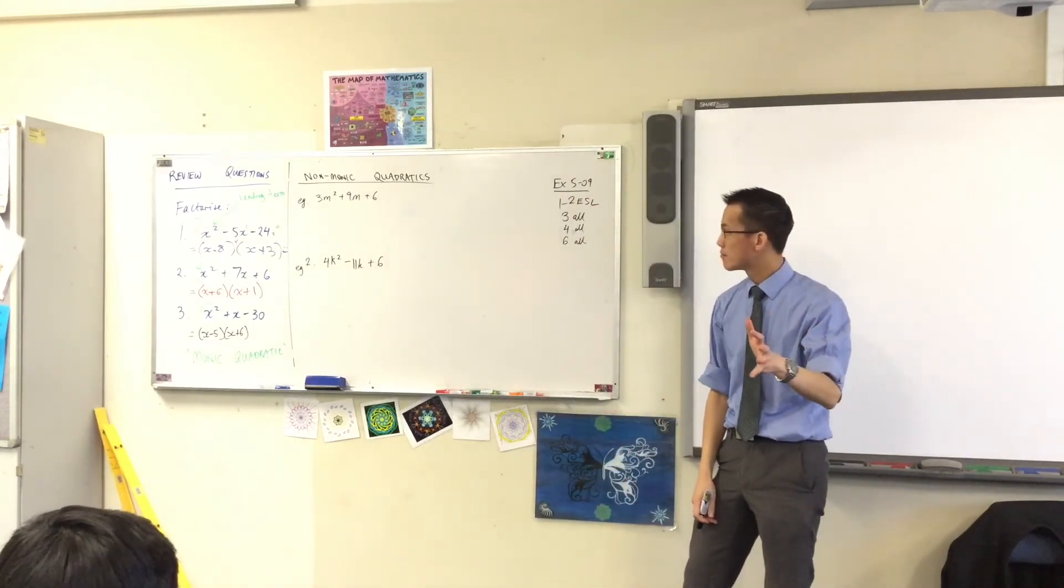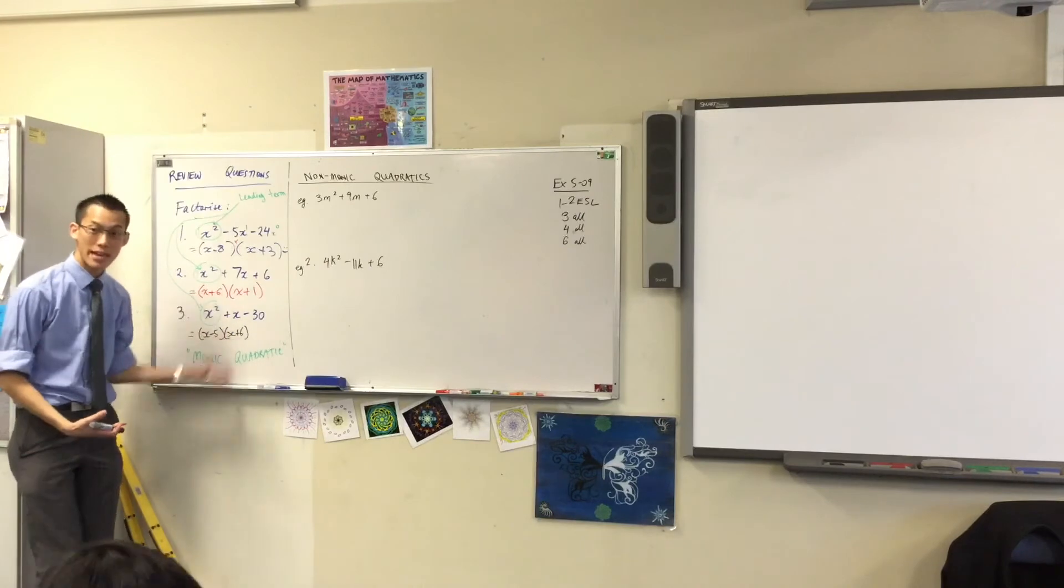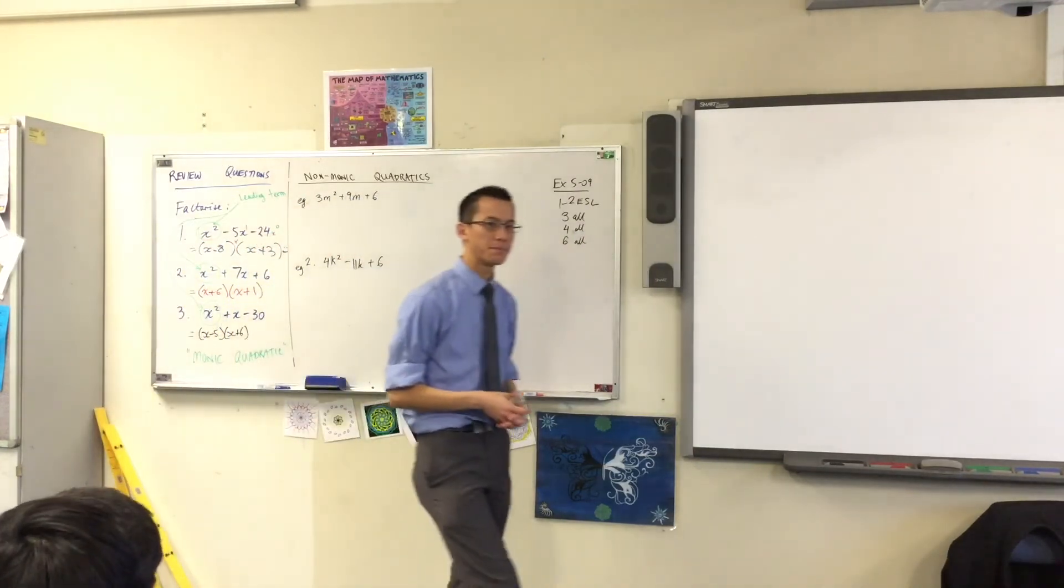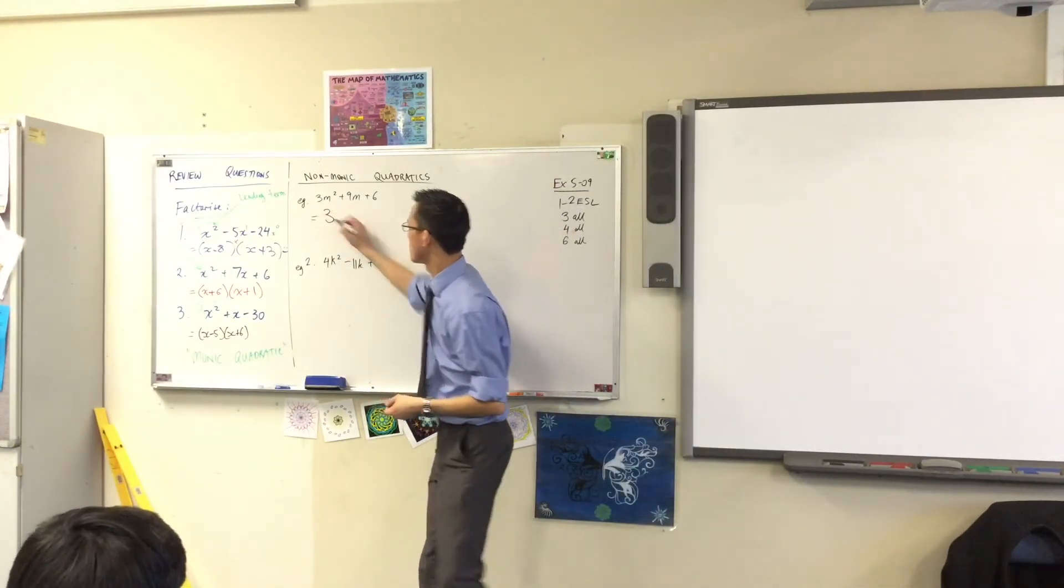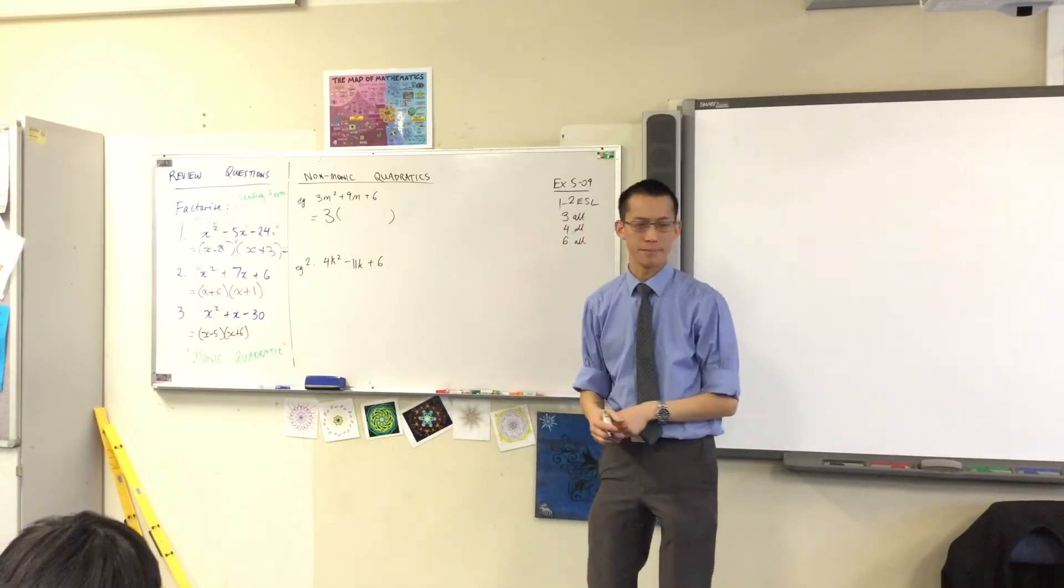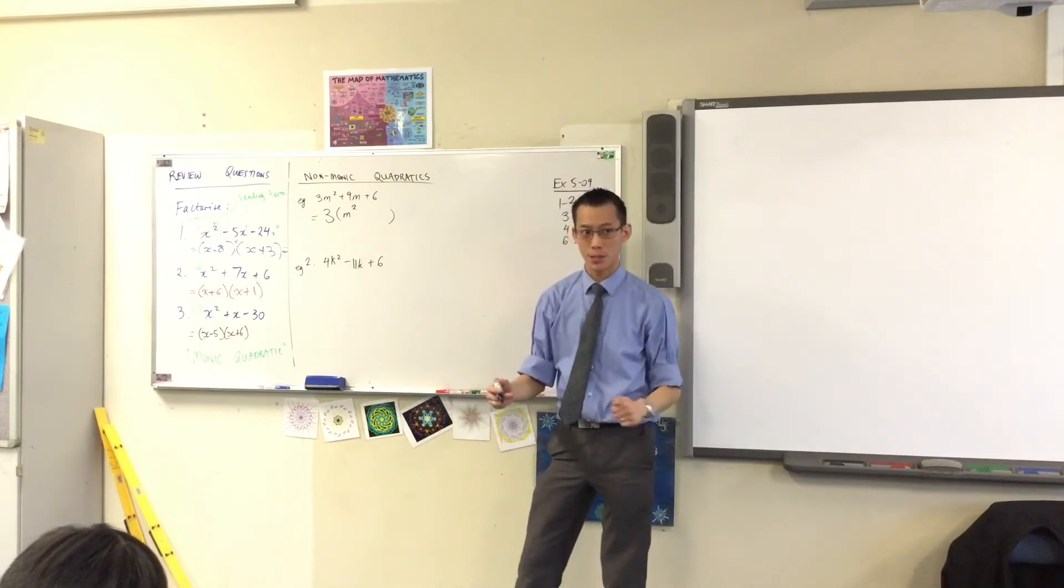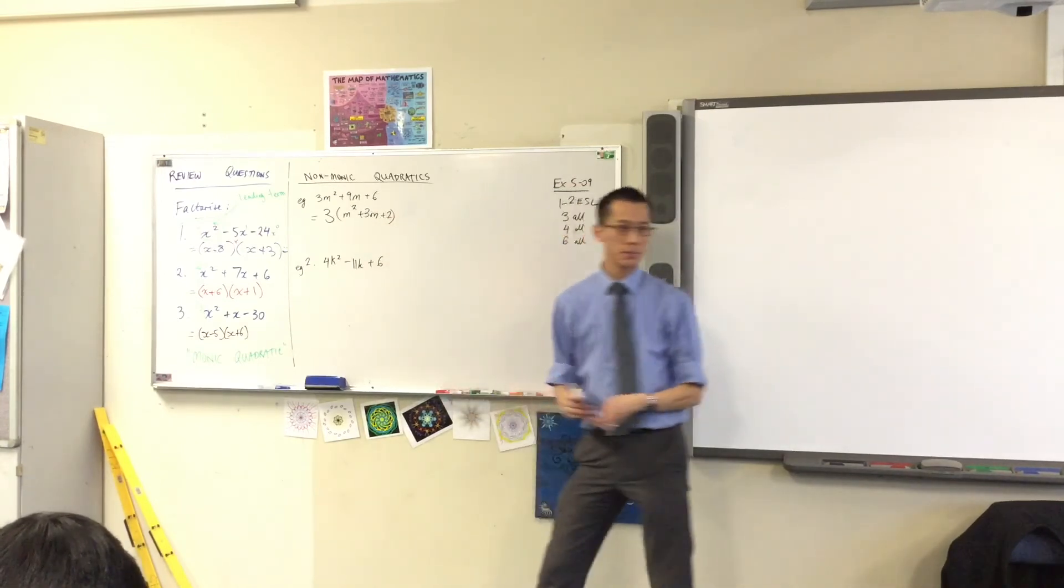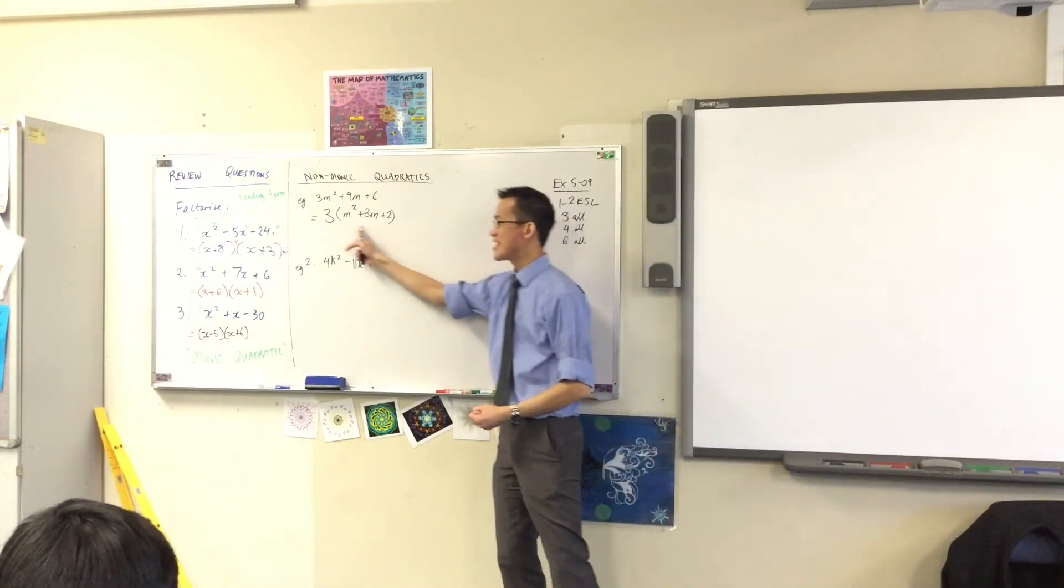That leading term has a coefficient of 3. In this case, before I even start to think about it as a quadratic, I notice that these numbers 3, 9, and 6 share something in common. What do they share? They share a factor of 3, which means I can take that out. So, I'm going to write equals. I'm going to bring the 3 out at the front, which means everything that is left behind, I'm going to divide by 3. So, how many m-squares will I have inside? Just one of them. That's how many m-squares I have. How many m's? Three of them. And what will the constant be? Two. I divide everything. That looks good. So, now you can see the whole thing is non-monic, but this thing in here is.